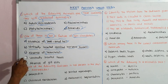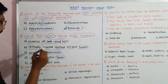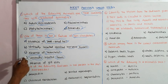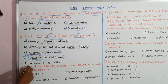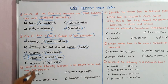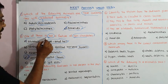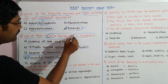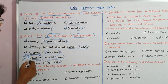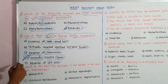Next option: absence of notochord — notochord is absent in non-chordates, so this is a correct feature. Next: ventrally located heart — in non-chordates the heart is on the dorsal side, not the ventral side. So this option does not match. Absence of gill slits — in non-chordates we have absence of gill slits. Therefore the answer is the ventrally located heart, which is not a feature of non-chordates.